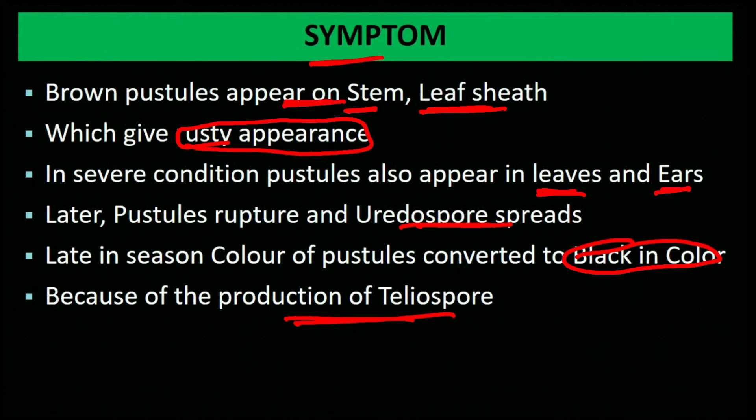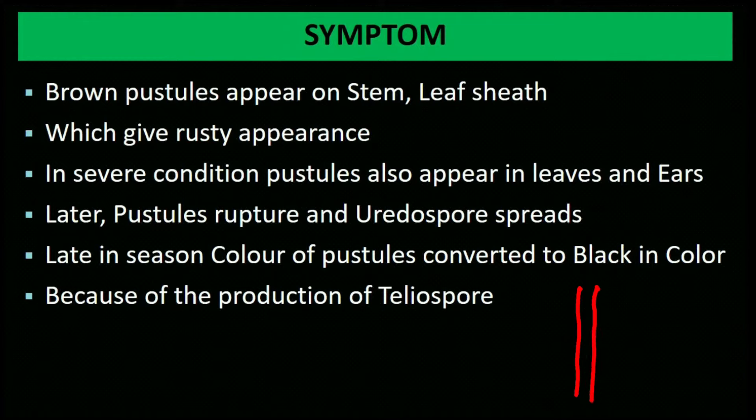The pustules turn black because of the production of teliospores. The first symptoms appear on the stem and leaf sheath. Leaf sheath is the area of leaf that covers the stem.